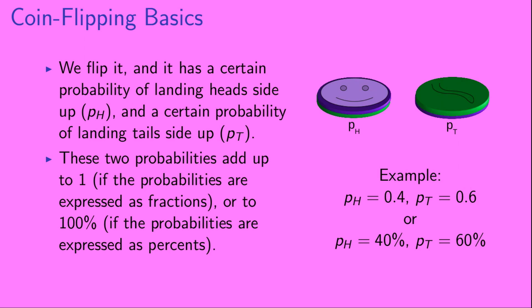These two probabilities add up to 1, if the probabilities are expressed as fractions, or to 100% if the probabilities are expressed as percents. So here we have an example, where the probability pH for the coin to land head-side up is 0.4 or 40%, and the probability PT for it to land tail-side up is 0.6 or 60%.